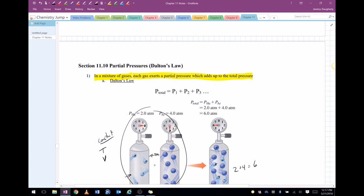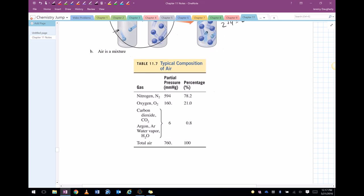And we show that by saying P total, so the total pressure is equal to the partial pressure of the individual gases.